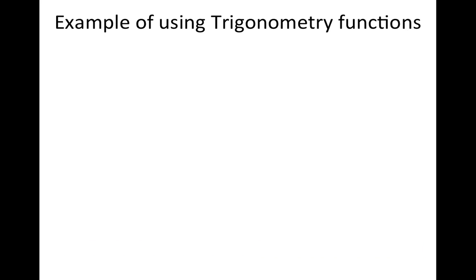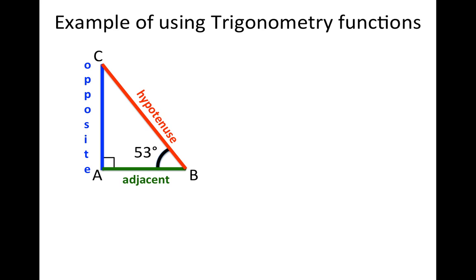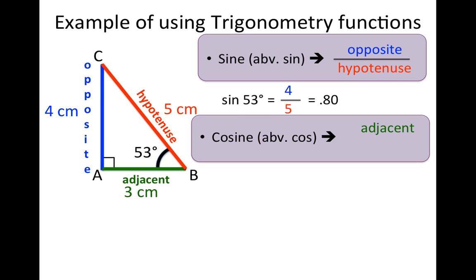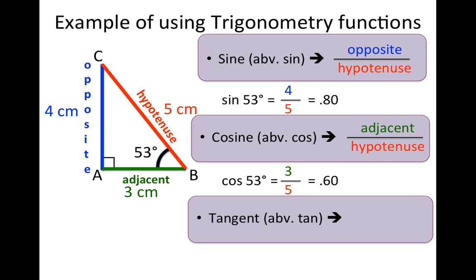Let's do an example of how to use this. Here is a right triangle with a 53-degree angle — this side is 3 inches long, that side is 4 inches long, and this is 5 inches long. The sine is opposite over hypotenuse, so the sine of 53 degrees is 4 over 5, or 0.8. The cosine is adjacent over hypotenuse, so the cosine of 53 degrees equals 3 over 5, which equals 0.6. And the tangent is opposite over adjacent, so the tangent of 53 degrees equals 4 over 3, which is about 1.33.